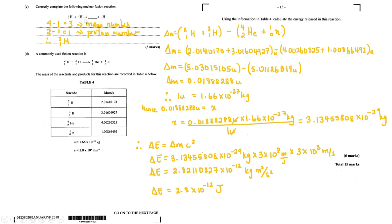So: four minus one equals three. The top number is always the mass number. For the bottom number, one plus one equals two — that's the proton number, giving you ³₁. The proton number of one indicates hydrogen. A commonly used fusion reaction is hydrogen-2 and hydrogen-3 coming together to form helium plus one neutron, producing really clean helium gas — not even a greenhouse gas. Two plus three is five; four plus one is five. One plus one is two; two plus zero is two. They balance.